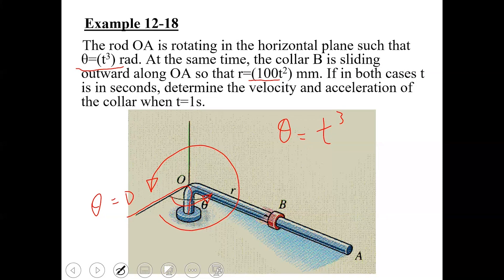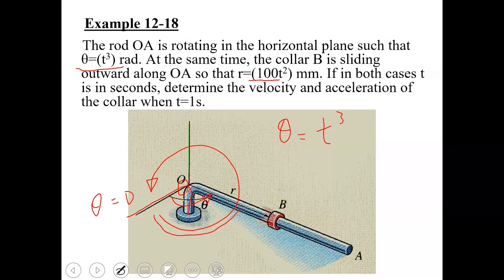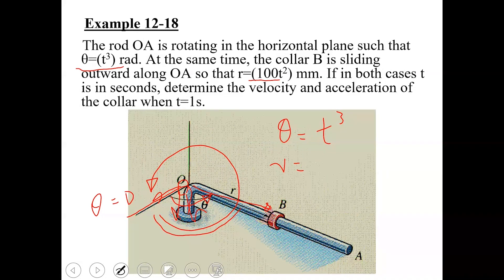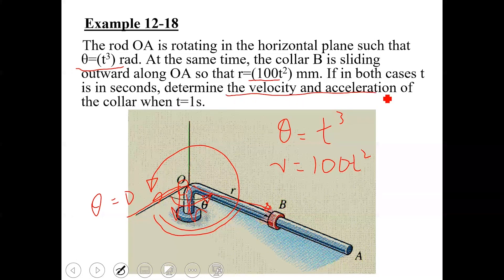At the same time, collar B is sliding outward along OA so that r is given as a function of time: r equals 100t squared millimeters. Initially the collar was located at r equal to zero. Due to the rotation of the rod, the collar slides outward. Both r and theta are in seconds, and we need to determine the velocity and acceleration of the collar at t equal to one second.